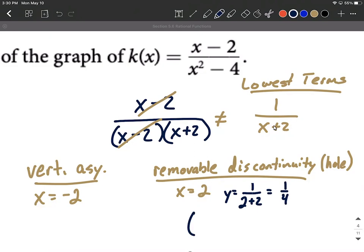So the hole or the removable discontinuity will have an x value of 2 and a y value of one fourth, and it's just going to be indicated by a little open circle in the middle of our graph, a hole in the graph.